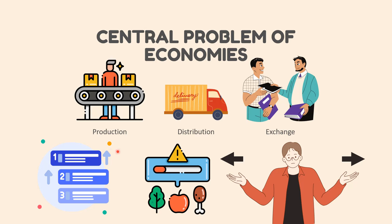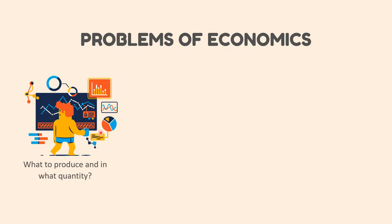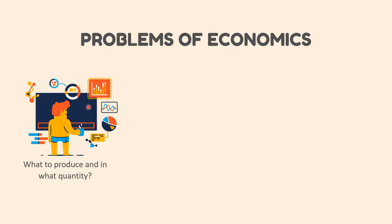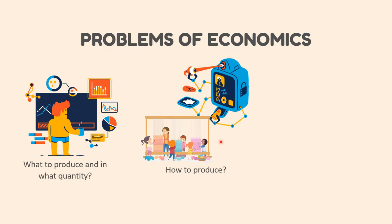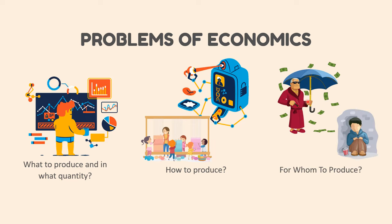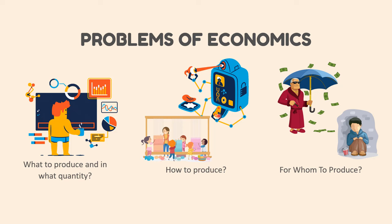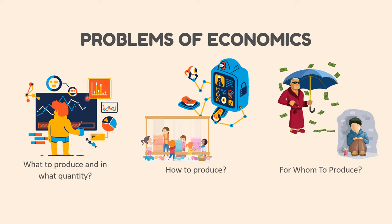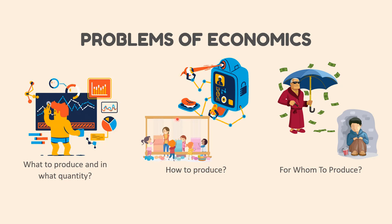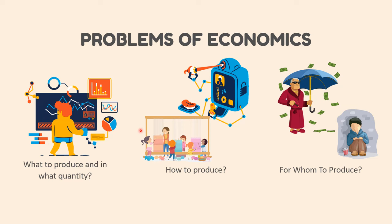The problems of an economy are often summarized in the following three ways: what to produce and in what quantity, how to produce, and for whom to produce. This helps to understand which goods or services are required in society, with which technique these are to be made, and who would consume these goods.